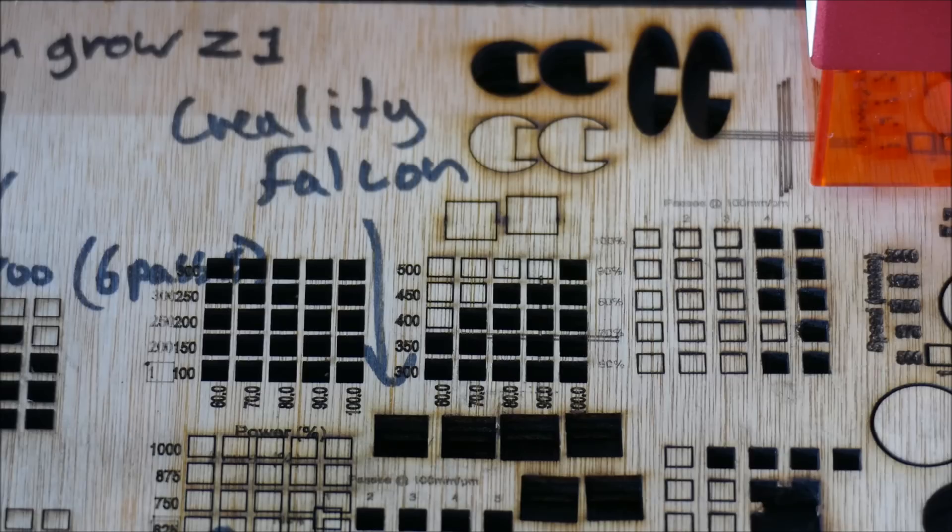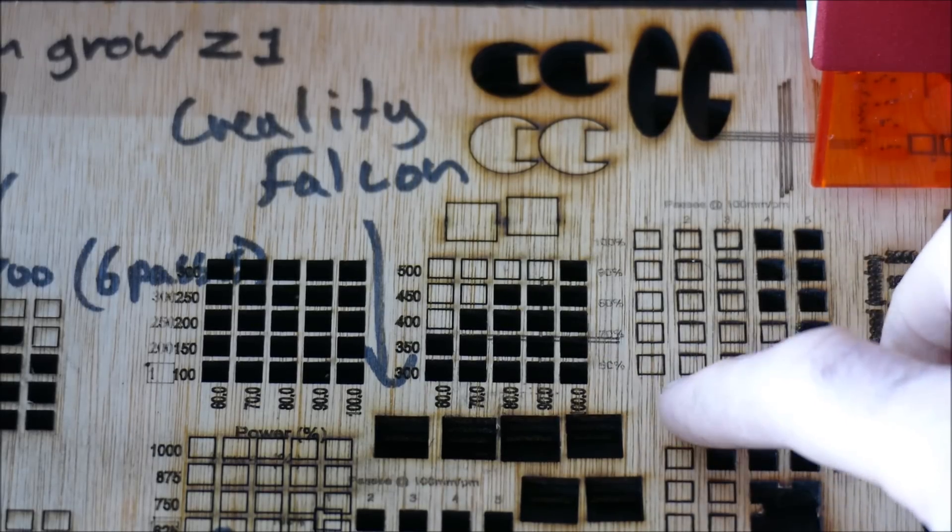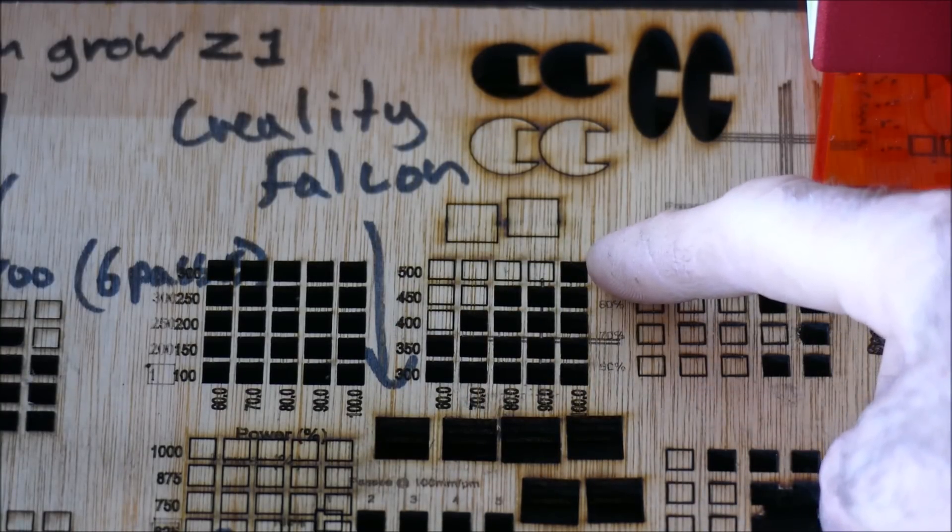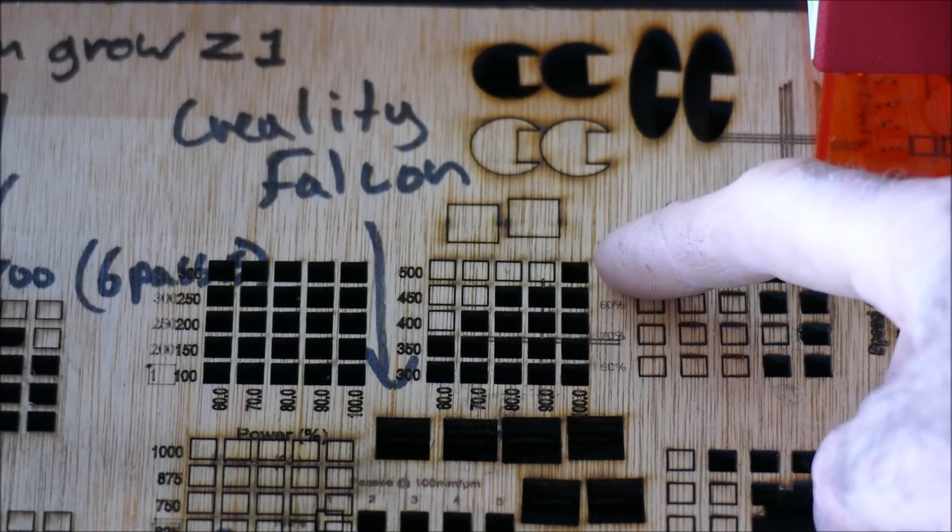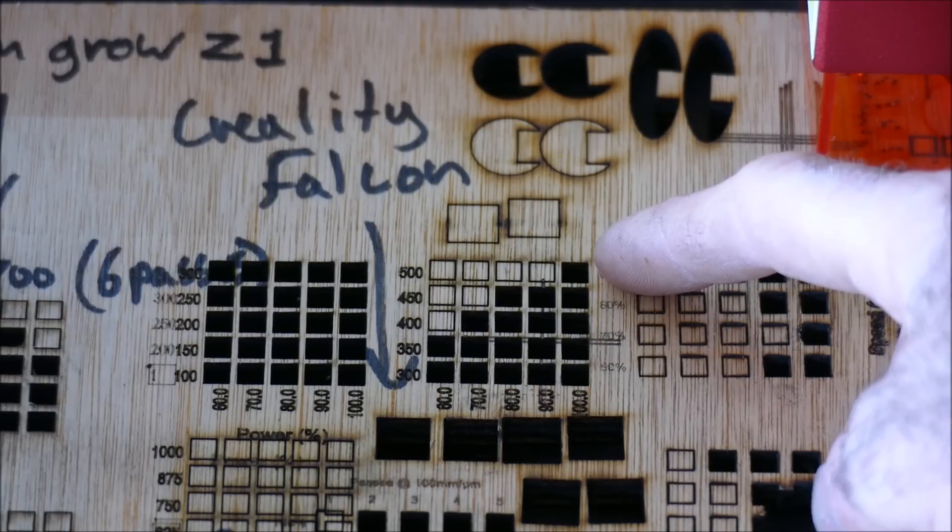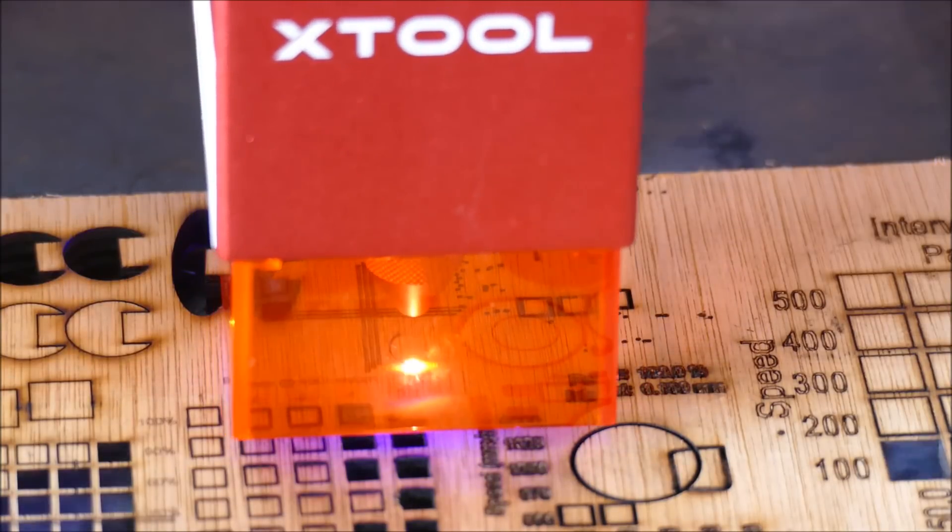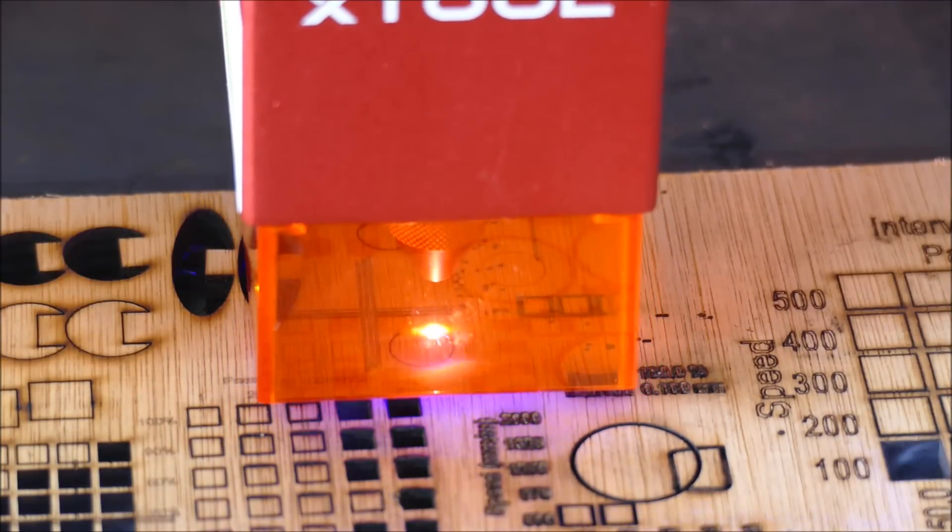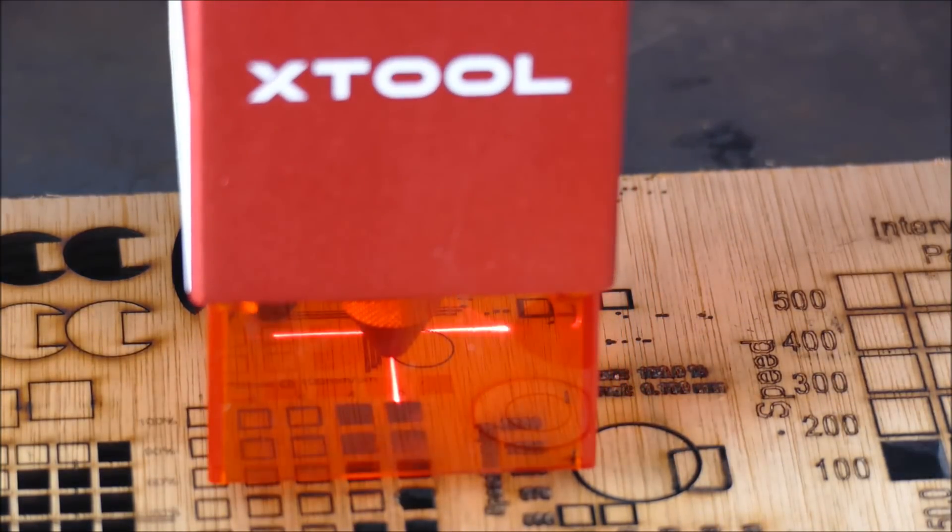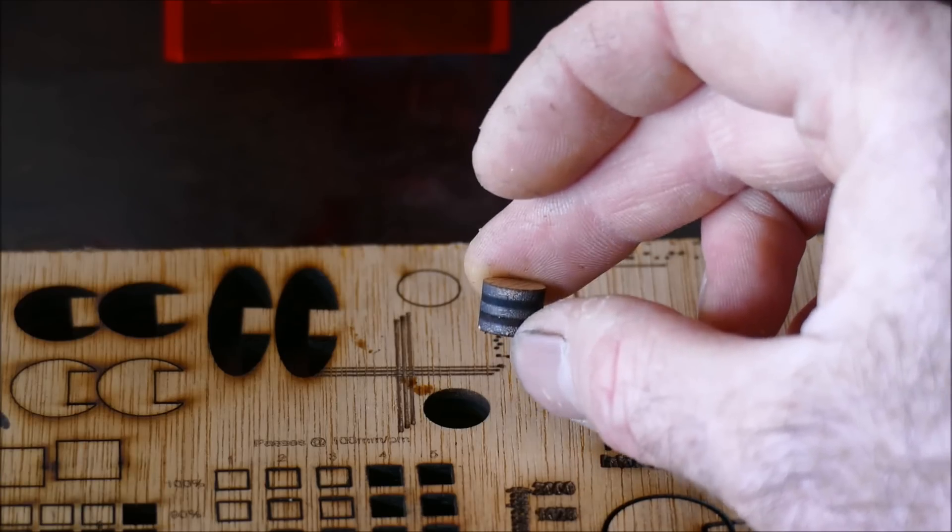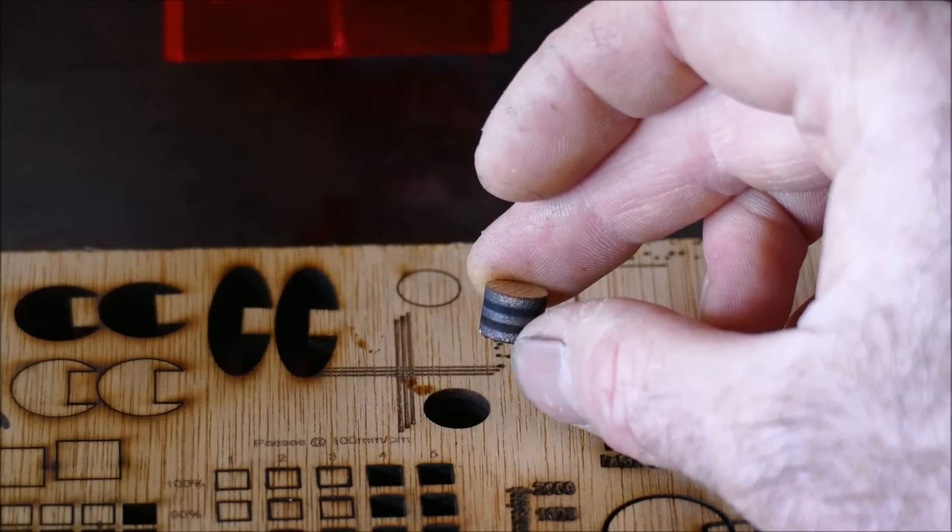So this is a board that I've been using to test all kinds of lasers. This is the one that I've just done for xTool. As you can see we're getting 100% penetration on 9 millimeter hardwood ply at 500 millimeters per minute. Let me show you what that looks like. That is without a doubt the fastest one pass cut on this board so far, but let me show you a much cleaner way to cut things.